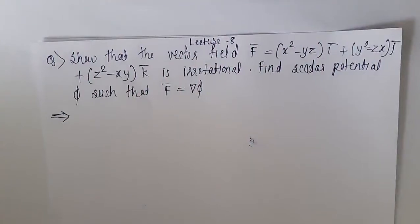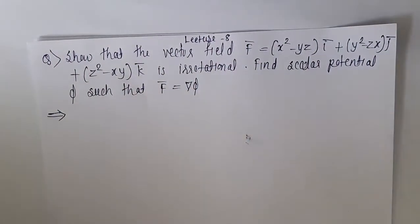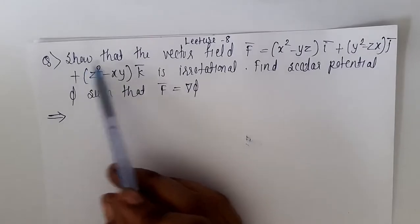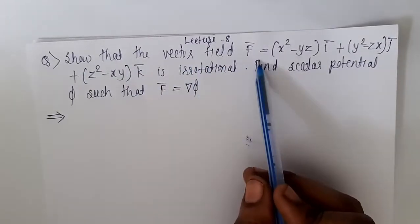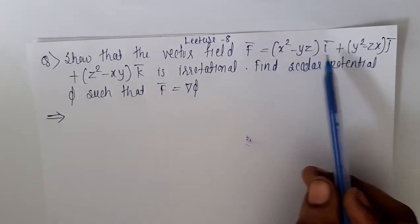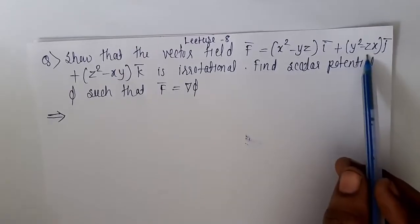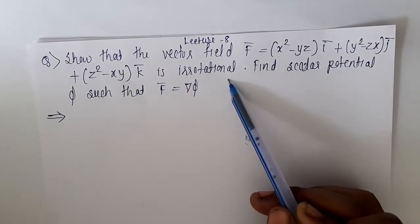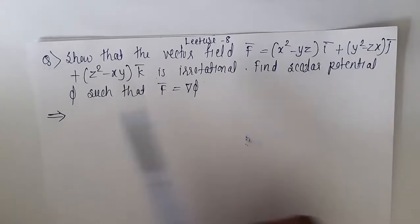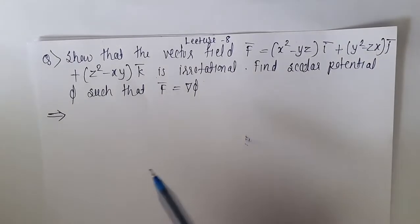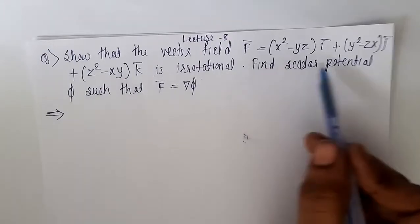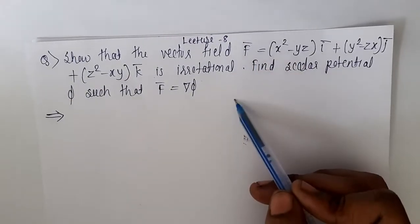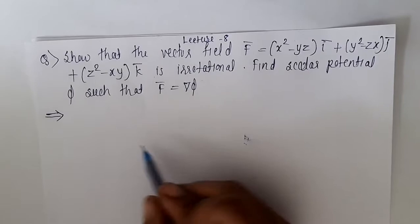Welcome to lecture number 8. Here is one example on divergence and curl: show that the vector field f equals (x² - yz)i + (y² - zx)j + (z² - xy)k is irrotational, and find scalar potential φ such that f equals gradient of φ. So here we want to show f is irrotational as well as find its scalar potential.